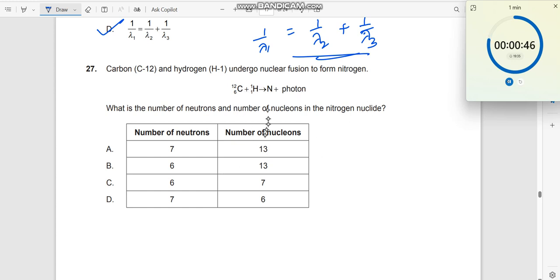When the equation is given, first do the balance here. Here at 12 nucleons, 1 nucleon here, there should be 13 here. And here 6 and 1 here, there should be 7 here. So you are getting 7N13 over here.